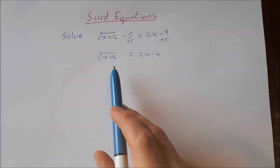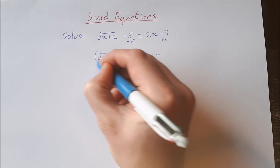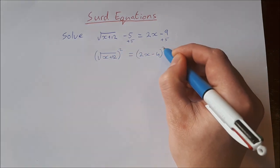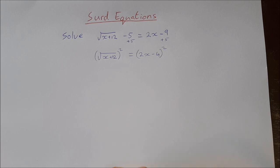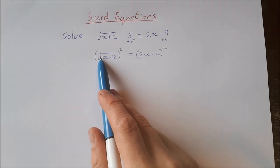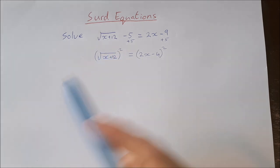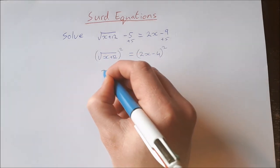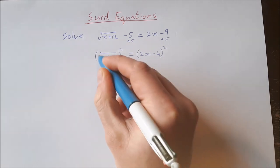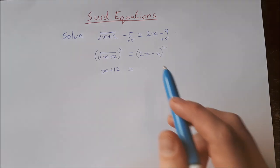Now at this stage we have isolated our radical, so what we're going to do is square both sides. When we square the radical on the left-hand side, the square root sign and the squared cancel each other out, and you're just left with x plus 12 — whatever is underneath the square root sign.